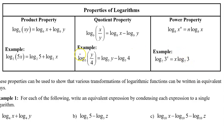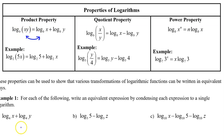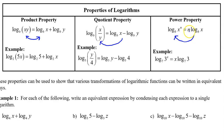Notice that all of these properties work in both directions. So for the product property, if we are given the sum of two logs with the same base, you could rewrite that sum as a single log of a product. If you are given the difference of two logs, you can rewrite that as a single log of x divided by y. And if you are given a log expression with something multiplying in the front, you can take the thing that's in the front and put it up as the exponent.